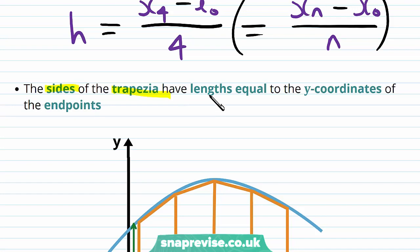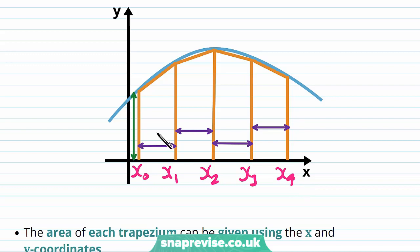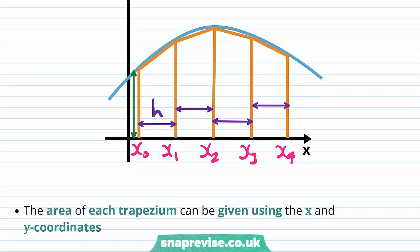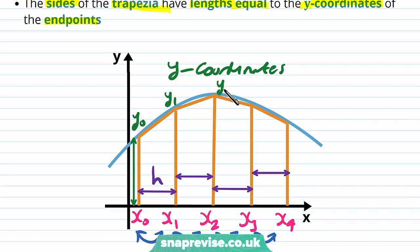The sides of the trapezia have lengths equal to the y-coordinates of the endpoints. We have x0, x1, x2, x3, and x4 with constant width h. We take our x-coordinates from the endpoints and substitute them into our function for the curve, giving us corresponding y-coordinates y0, y1, y2, y3, and y4.